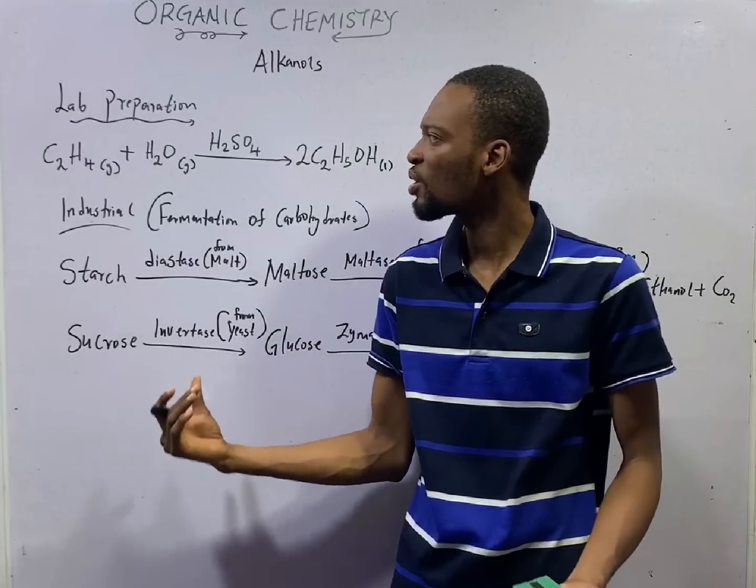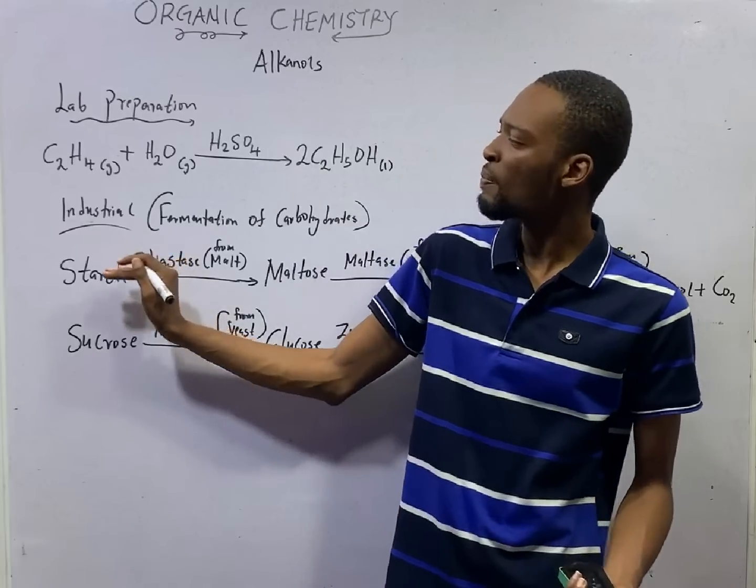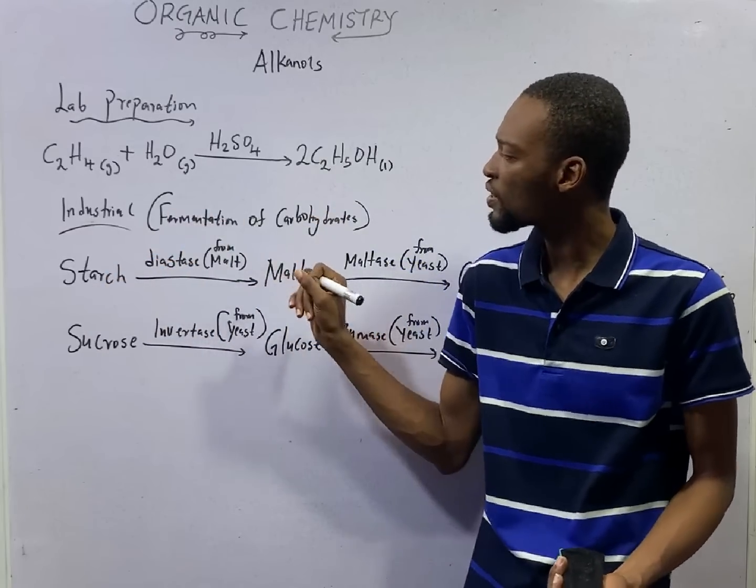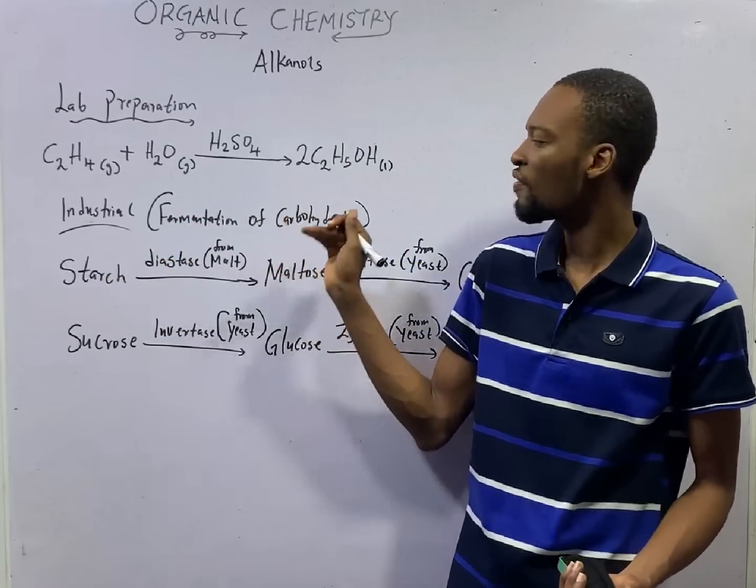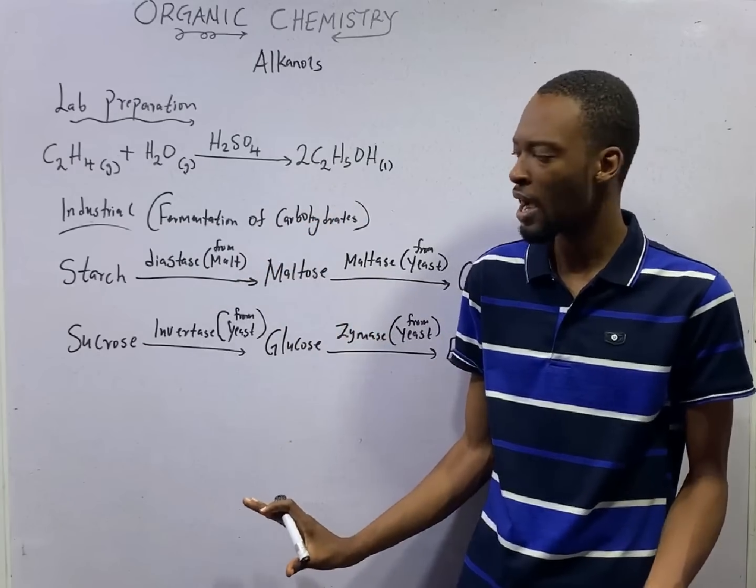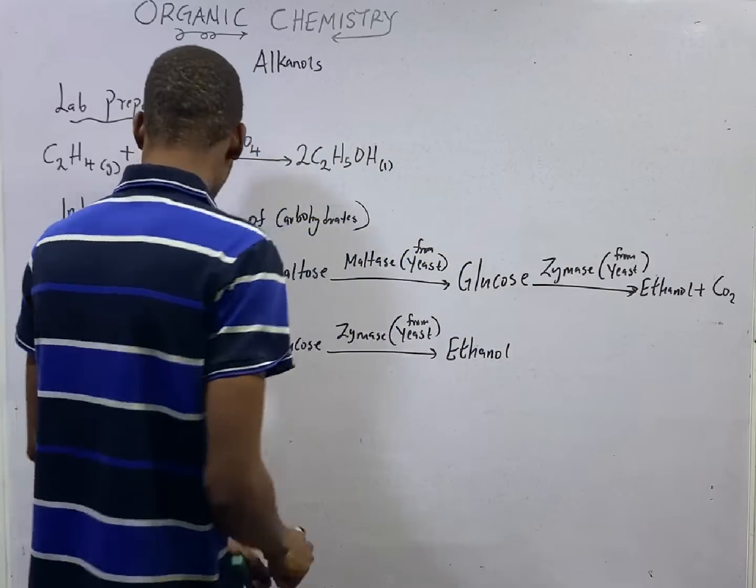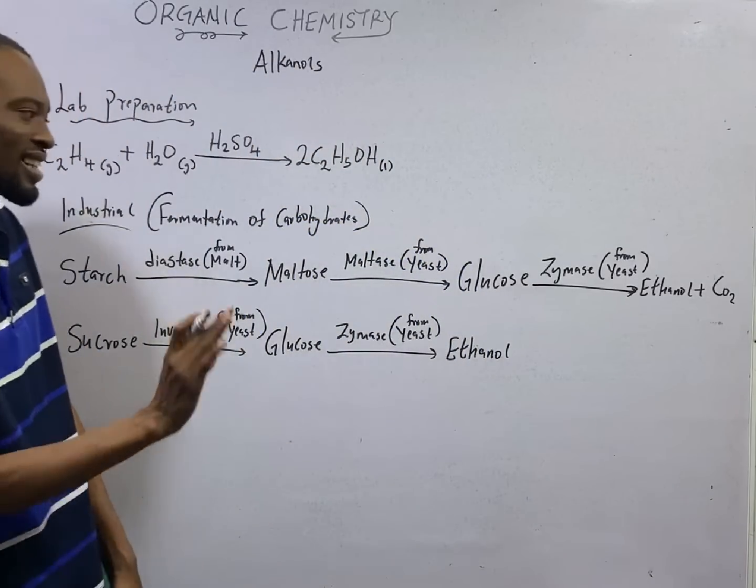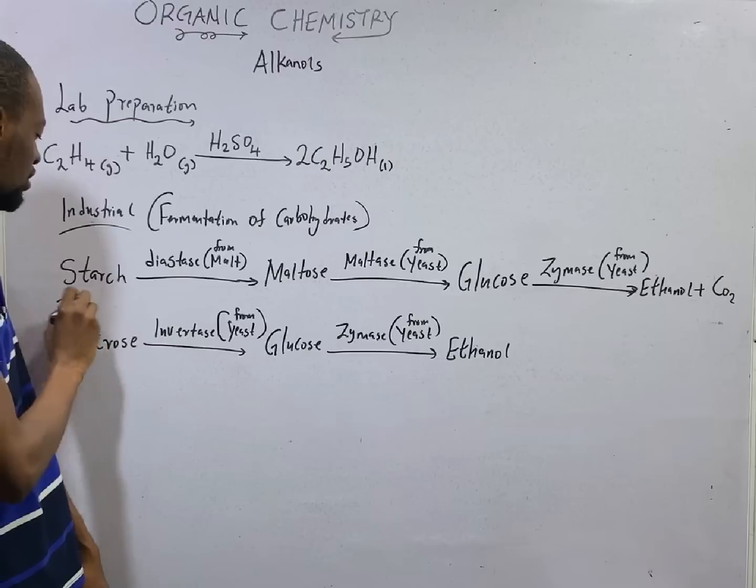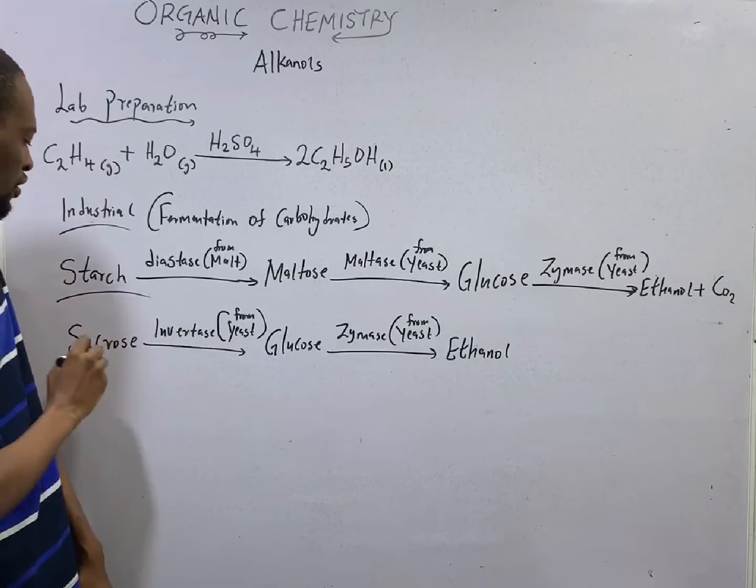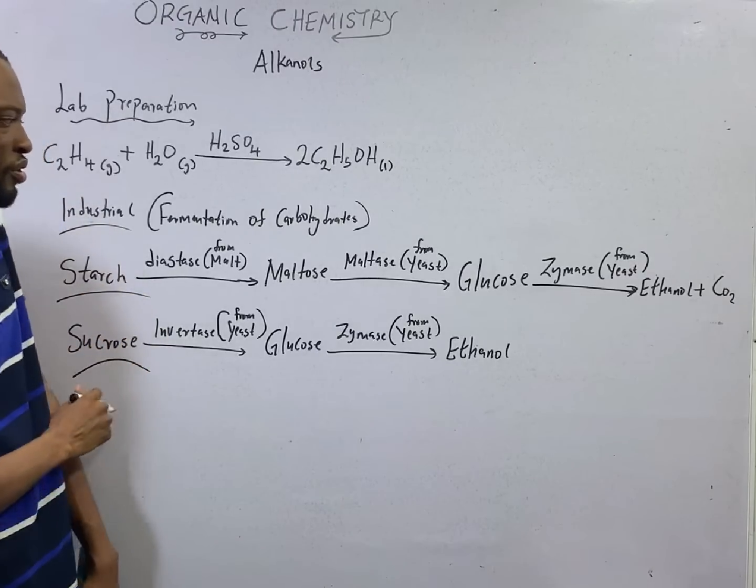How about in the industry? Industrial preparation of ethanol involves or has to do with the fermentation of carbohydrates. Fermentation of carbohydrates can be done in two ways. We can get ethanol from starch or directly from sucrose.